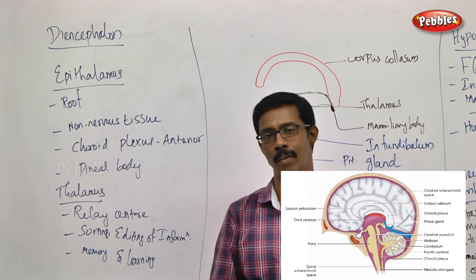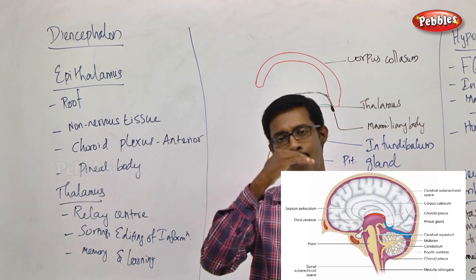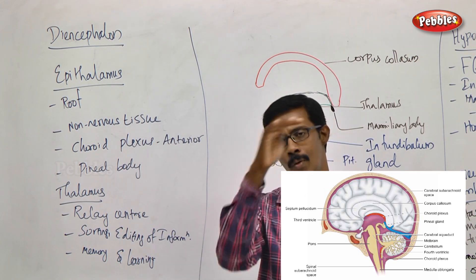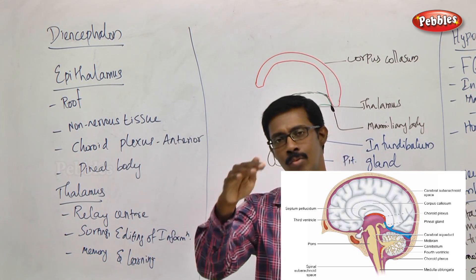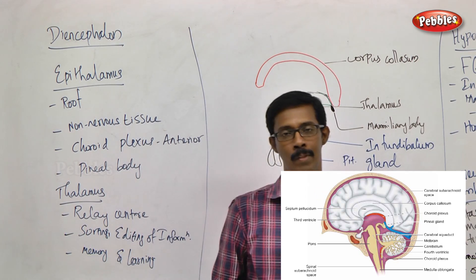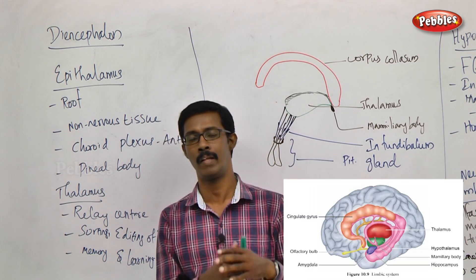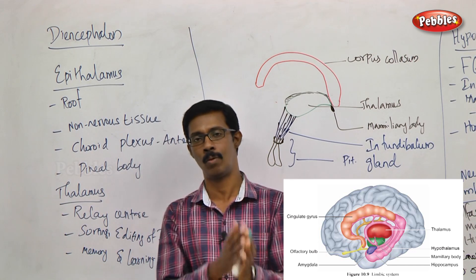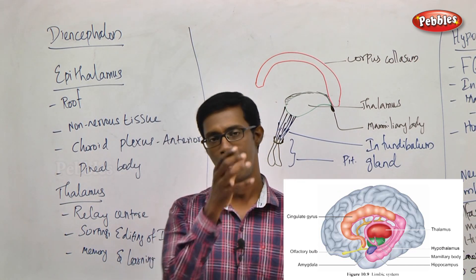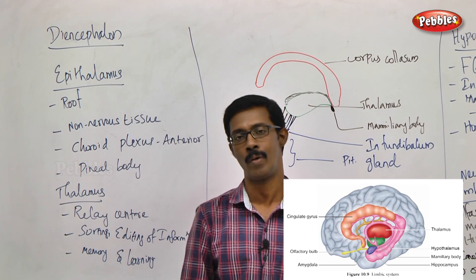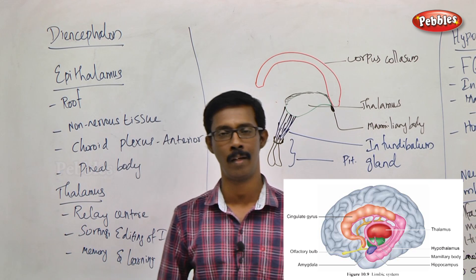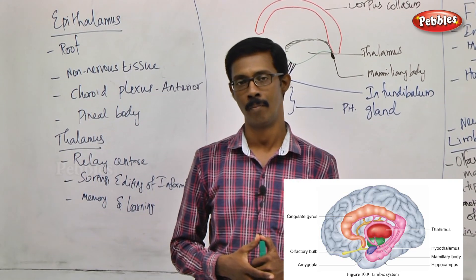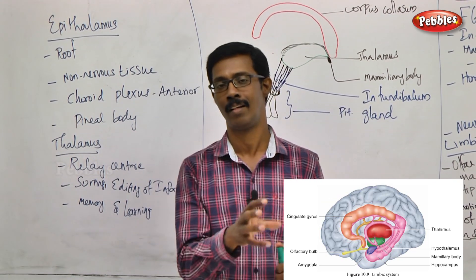We are looking at the Diencephalon region. Diencephalon is the topmost layer — the superficial layer is called Epithalamus. Below that, the middle bulky region is called Thalamus. The middle region below that is called Hypothalamus. Hypothalamus is actually a funnel-shaped structure. It is called Infundibulum. Infundibulum is connected to the pituitary gland.